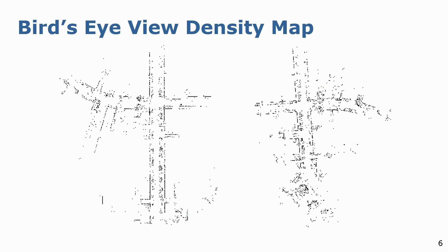To do so, we take the local map and project it onto a local 2D ground plane. For axis-aligned ground vehicles, this transform simply corresponds to dropping away the z-coordinates of the points in the frame of the local map. Furthermore, we discretize this 2D plane and preserve the density of points within each discretized pixel. This gives us the 2D bird's eye view density map as seen here, which looks similar to a 2D floor plan.